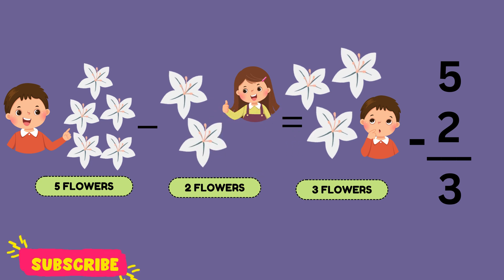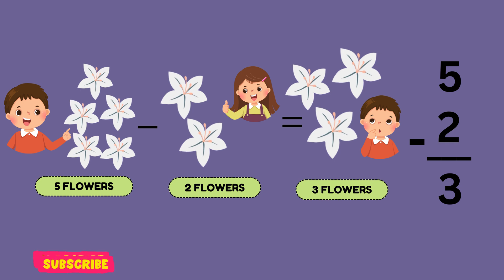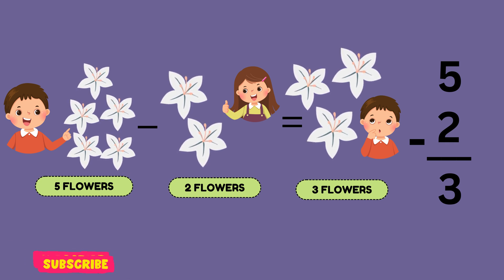Mac has five flowers. Jenny takes two flowers from Mac. How many flowers are left? Yeah, right — now Mac has three flowers.